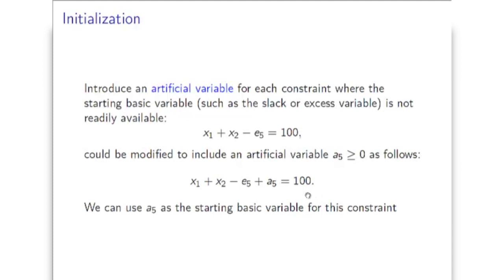So this artificial variable works as the basic variable for this constraint, but only assuming that eventually this variable A5 will be forced to become 0. When we introduce this artificial variable, we assume it is non-negative like all other variables in the LP, and A5 equal to 0 is the lowest value this variable can have. Therefore, somehow we need to minimize the value of A5 and make sure that A5 will eventually become 0. When A5 is equal to 0, this constraint will become exactly equivalent to the original constraint, and therefore the original constraints will be satisfied.